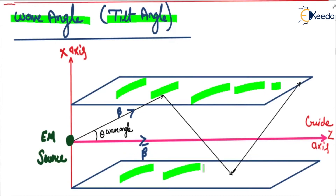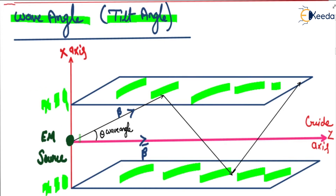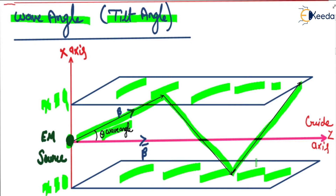This is the parallel plane waveguide, and these are the two metallic plates. One plate is at x equal to 0, and another plate is at x equal to a. This is the EM wave source, and the wave is propagating in this way. This angle theta is called as wave angle.